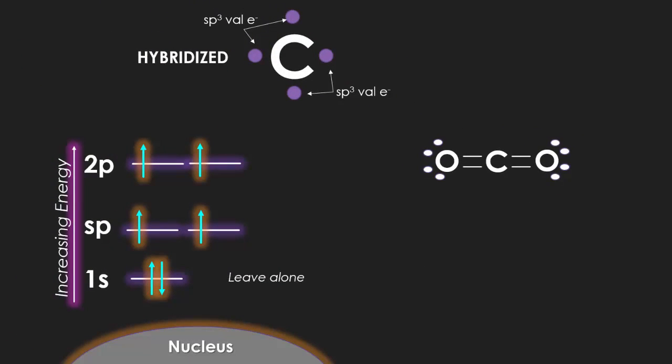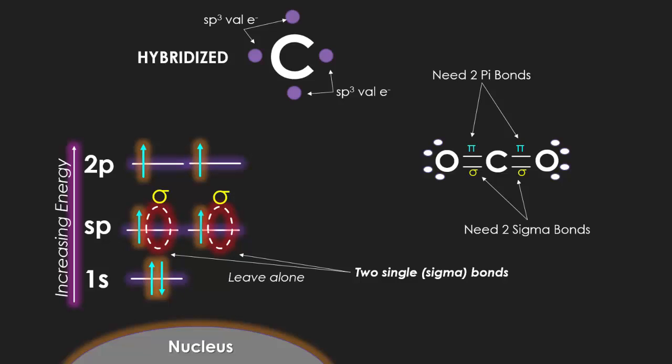Carbon dioxide also follows a similar pattern to hydrogen cyanide because of the fact that it has two sigma bonds. So it has the sp hybridization. It has two single bonds. The second bond in both double bonds are the pi bonds, which are the 2p leftovers.